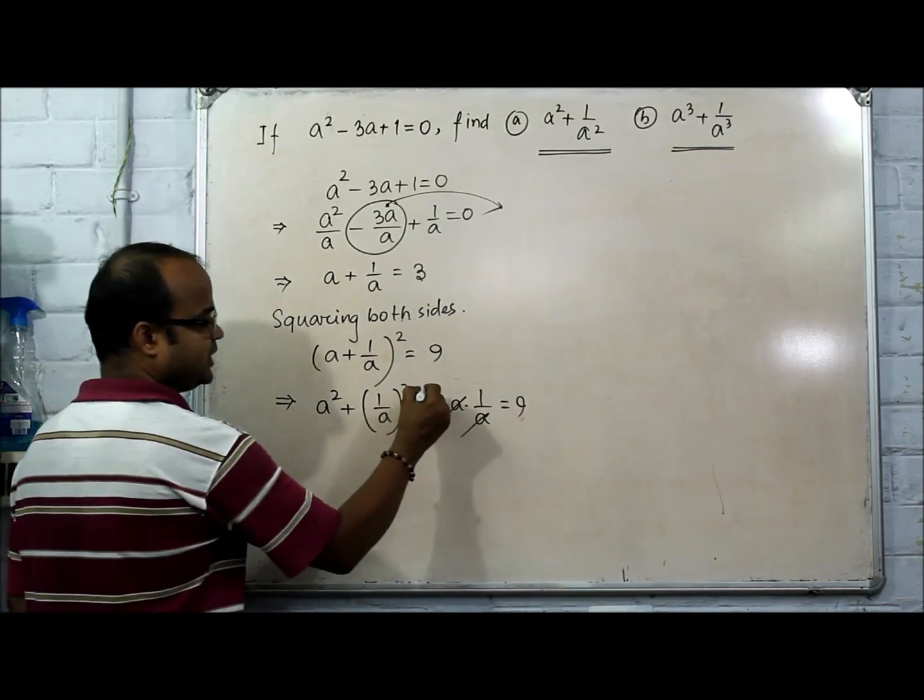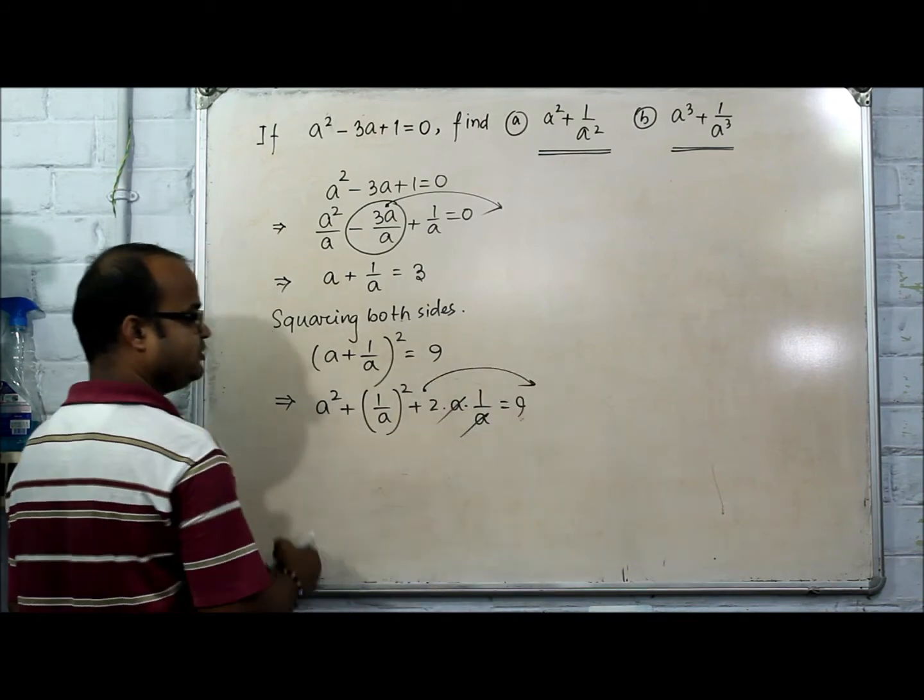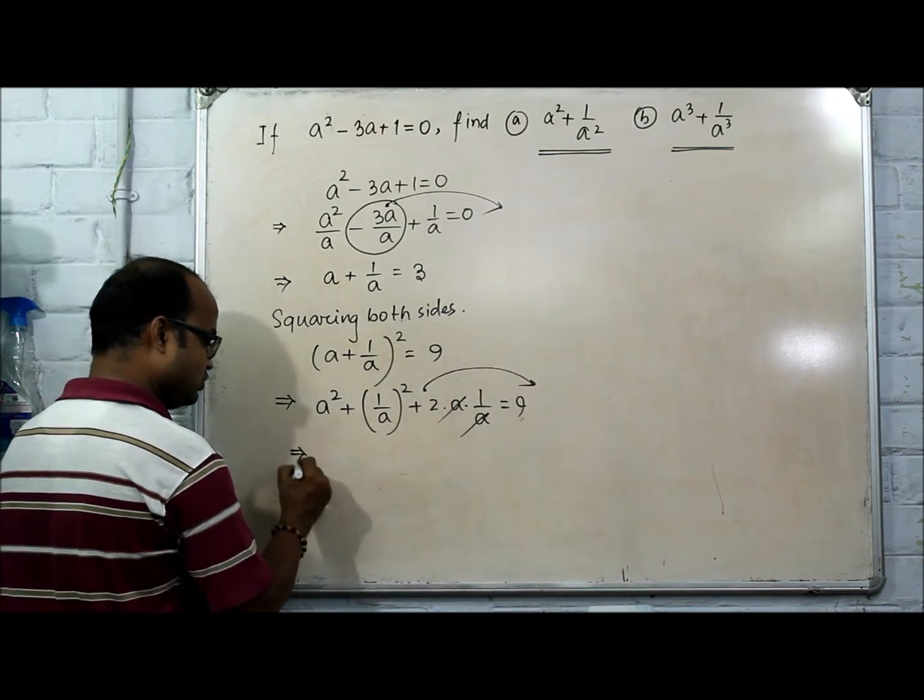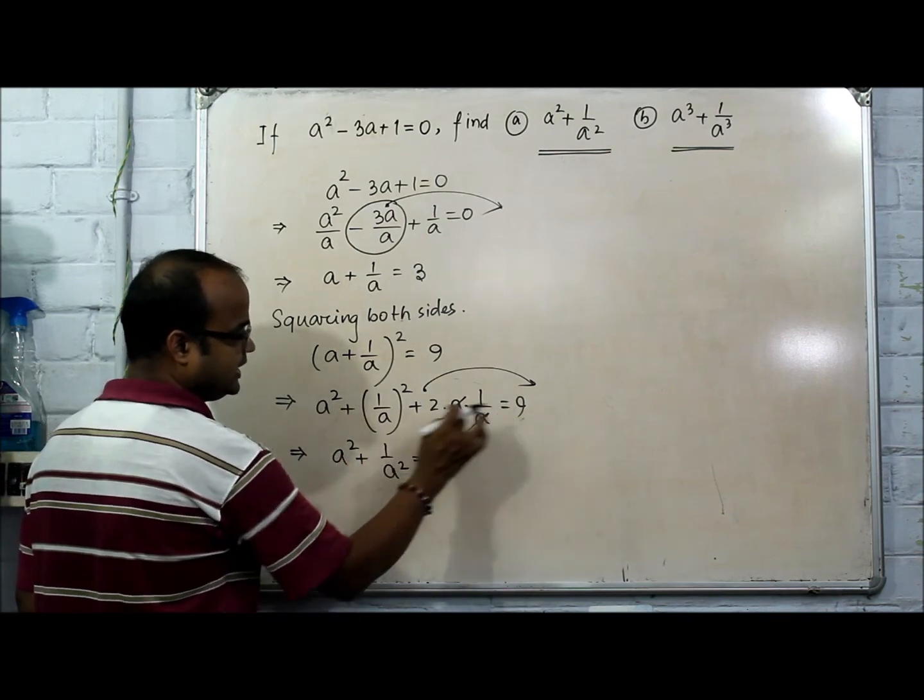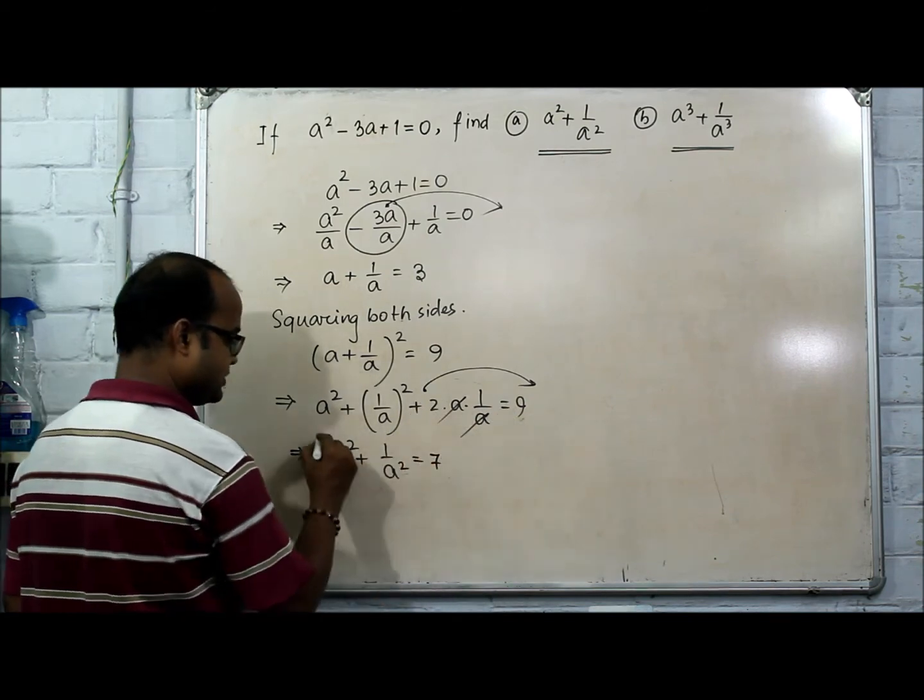a gets cancelled. So plus 2, when you change the side, it will become minus 2. So a² + 1/a² = 9 - 2 = 7.